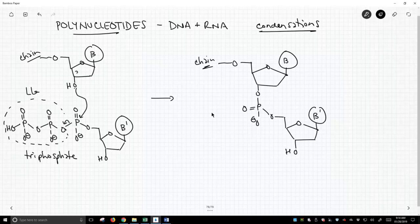And so this is the 3 prime end and this is the 5 prime end of our sugar. So we've now gone from 5 prime to 3 prime. I'm sorry, 3 prime to 5 prime. And now we have a new 3 prime end. And this OH will go off and attack some triphosphate nucleoside.